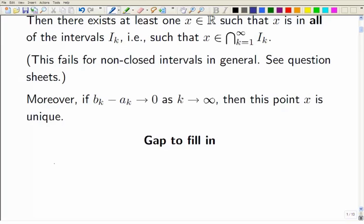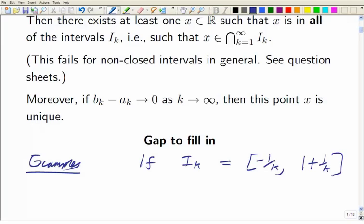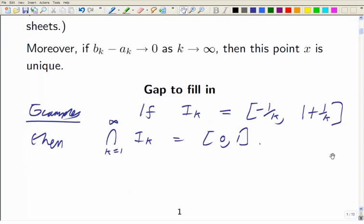So here are the two examples that you might want to think about. If I_k is minus 1 over k up to 1 plus 1 over k, then they shrink down all right, but what they tend to is a closed interval 0, 1. So here, the lengths don't tend to zero, and you have infinitely many points left. So just a quick picture of that situation. Here's 0, 1.